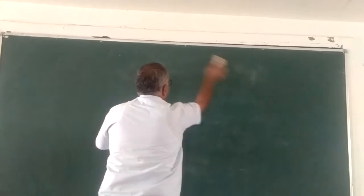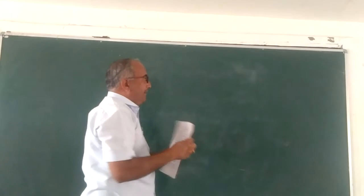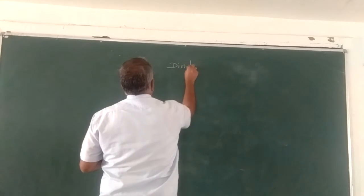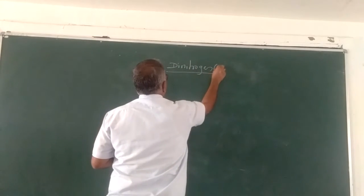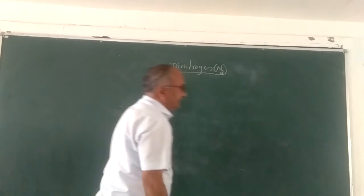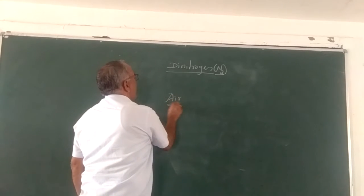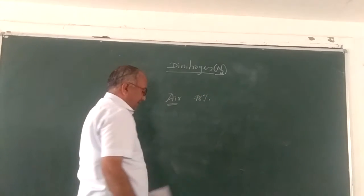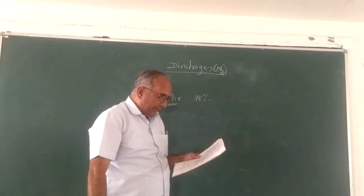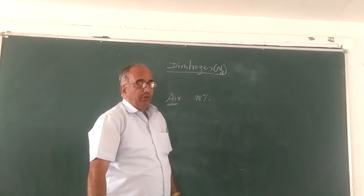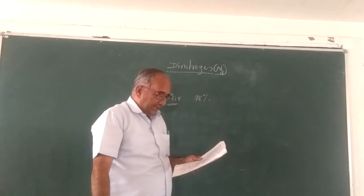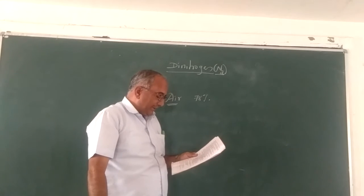Now we study the compounds of nitrogen, starting with dinitrogen (N₂). Atmospheric air contains 78% by volume of nitrogen. Therefore, dinitrogen is produced commercially by the liquefaction and fractional distillation of air. The air is liquefied and then by fractional distillation we get nitrogen. Liquid nitrogen has a boiling point of 77.2 Kelvin.